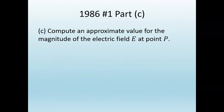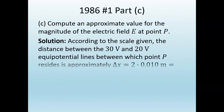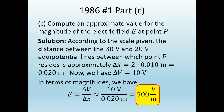For Part C, one point for listing the electric field as ΔV/Δs, one point for noting ΔV = 10 volts, one point for noting Δs = 0.02 meters, and one point for the correct final answer of 500 volts per meter with units. Always plug in your units during calculations — if you hadn't listed them among the givens, you'd need them when substituting numbers.